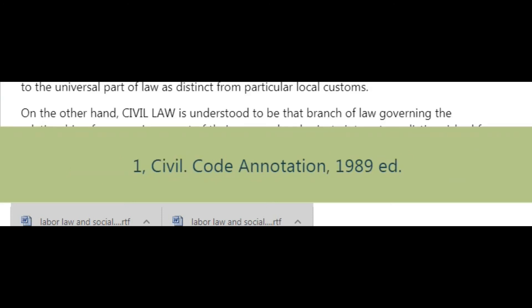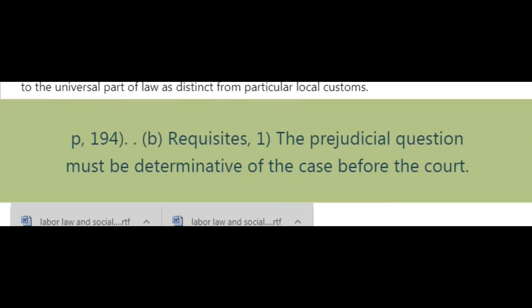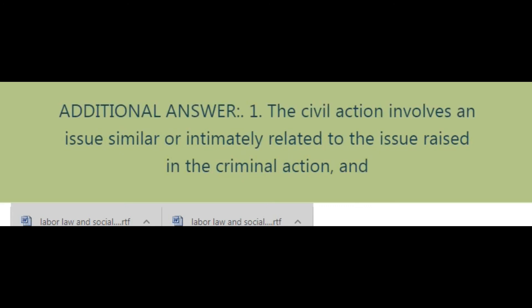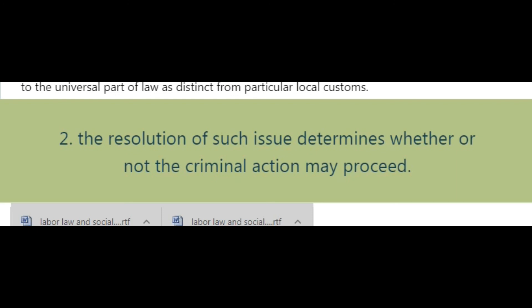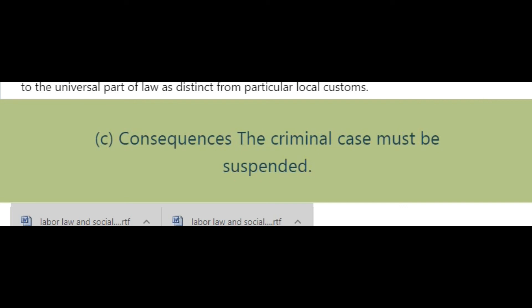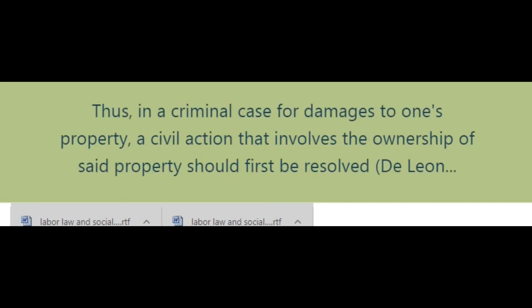Answer (B) — Requisites: (1) The prejudicial question must be determinative of the case before the court; (2) jurisdiction to try said question must be lodged in another tribunal. Additional requisites: (1) The civil action involves an issue similar or intimately related to the issue raised in the criminal action; and (2) the resolution of such issue determines whether or not the criminal action may proceed. Answer (C) — Consequences: The criminal case must be suspended. Thus, in a criminal case for damages to one's property, a civil action involving the ownership of said property should first be resolved (De Leon v. Mabanag, 38 Phil. 202).